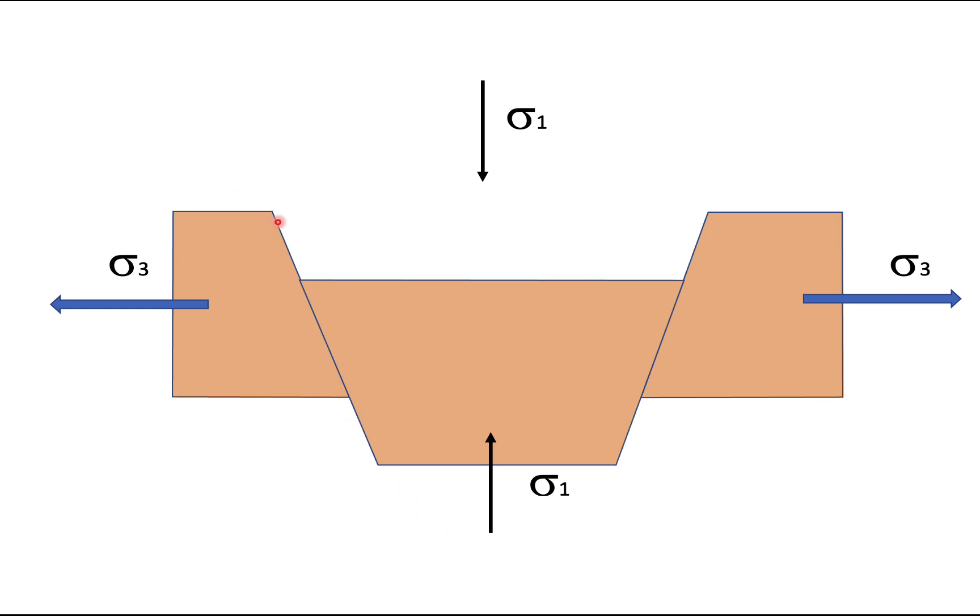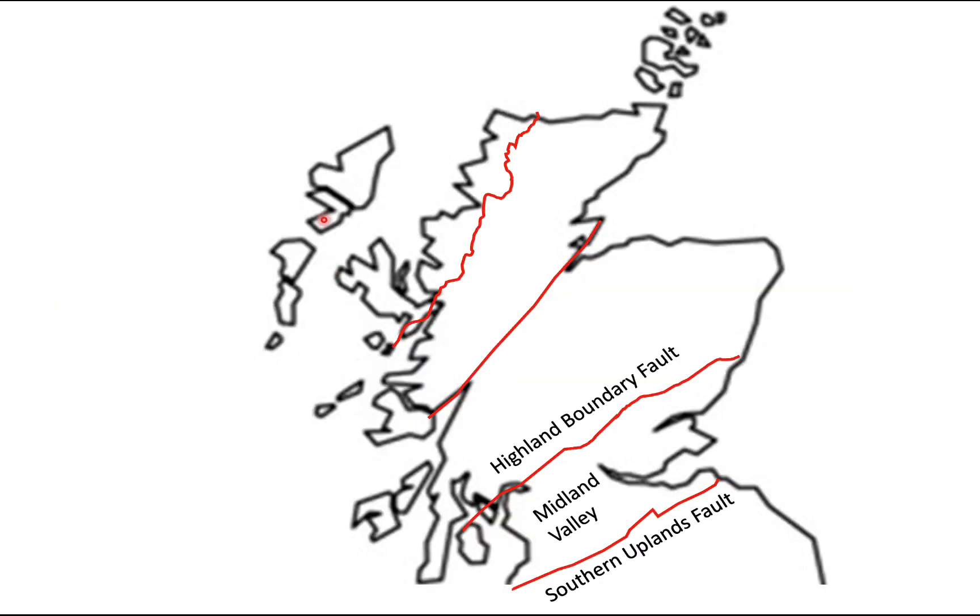They're typically around 60 degrees or so the dip on these faults. The motion is down dip rather than along strike. And the iconic normal faults in Scotland are the highland boundary fault and the southern uplands fault with the midland valley in between forming this graben.